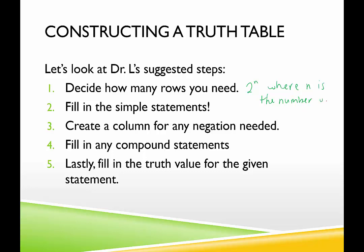If we have just one simple statement, we need two to the first, which is two rows. If we have two, that's two squared, requiring four rows. If we have three simple statements, that's two cubed, which is eight — we need eight rows because there are eight different ways to lay out all the trues and falses for those three simple statements.